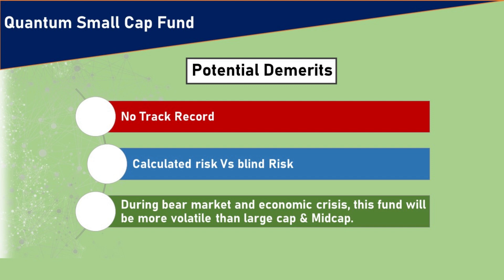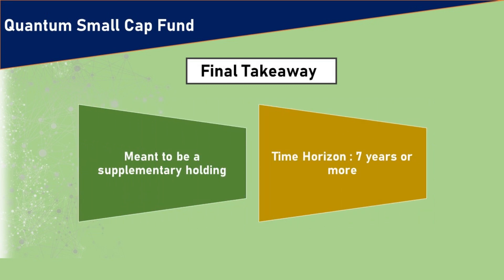A smart investor should take only calculated risk, not blind risk. Investing in the Quantum Small Cap NFO without any track record and without any portfolio is like taking a blind risk. During bear markets and economic crises, this fund can be more volatile compared to large cap and mid cap, since small cap funds have a higher volatility quotient.